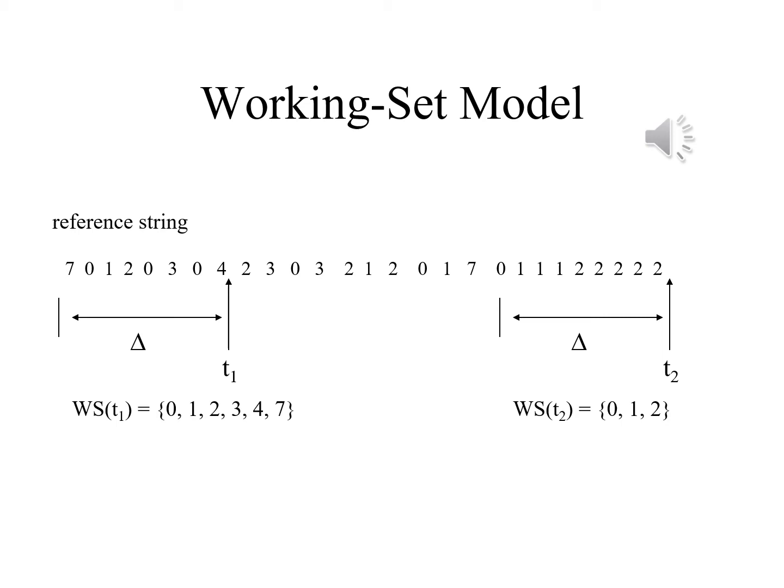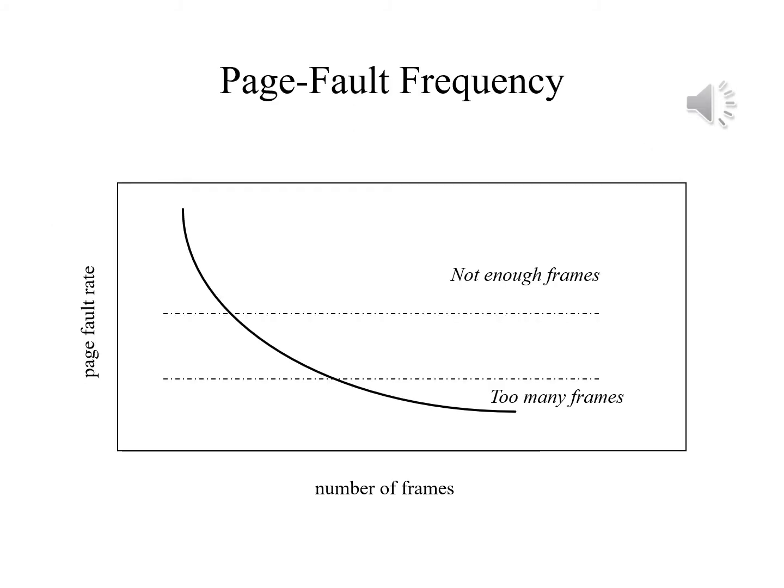The only problem is that it is quite expensive to compute all this. There is a more direct way to avoid thrashing: keep the page fault rate within a certain range.